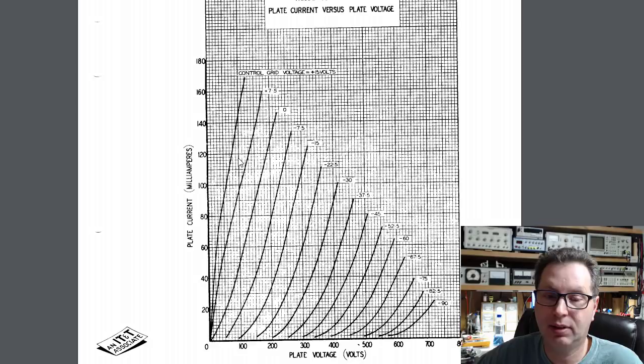So the harder you drive it, the more this thing will swing left and right, ultimately until you start getting into parts of the curves here that are non-linear and you start getting distortion. But hopefully this makes a little sense to you in that the amplifier does not just sit here at this one single operating point. Once you start feeding in an audio signal, this thing drives back and forth up and down this load line.